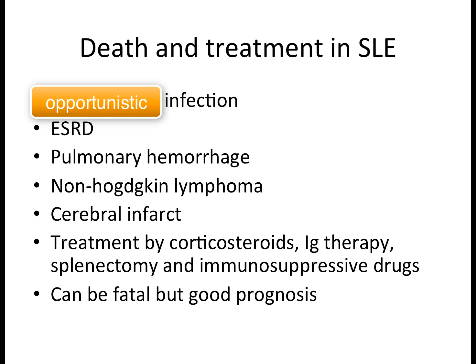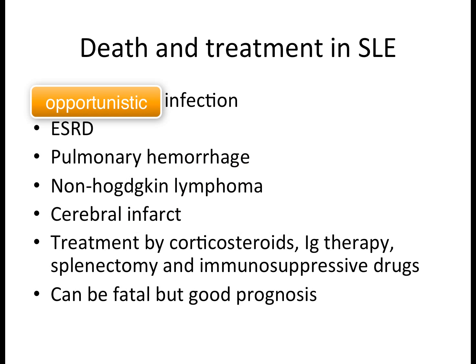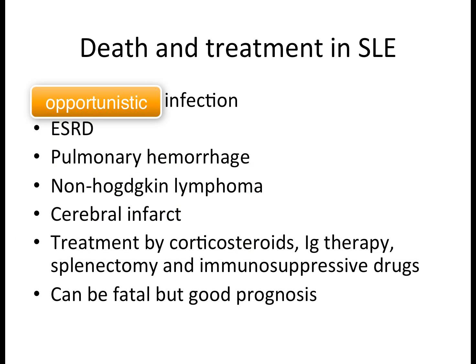Treatments for SLE include corticosteroids, which by their anti-inflammatory properties decrease antibody formation — the major factor in SLE. Immunoglobulin therapy can also be used: flooding the patient with immunoglobulins saturates the FC receptors of splenic macrophages, keeping them busy so they cannot digest blood cells, helping with leukopenia, anemia, and thrombocytopenia — collectively called pancytopenia. Splenectomy — removing the spleen — is another option since it is the site of hematological problems.